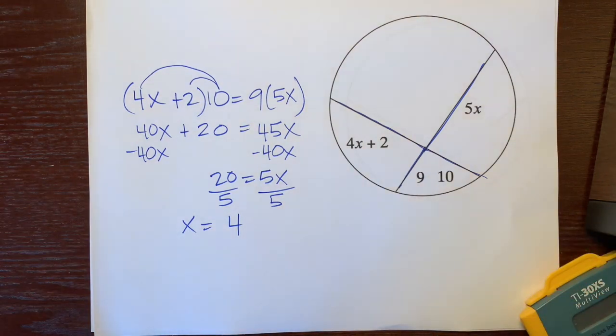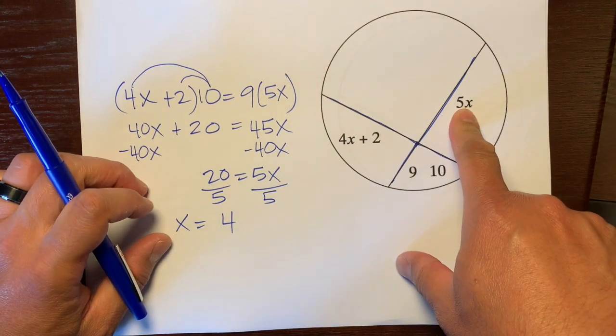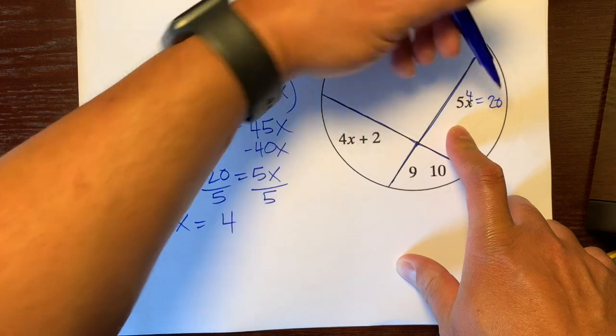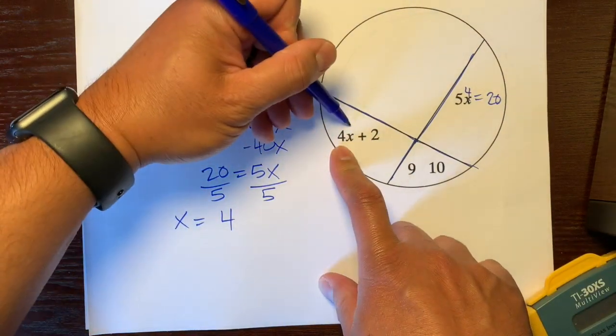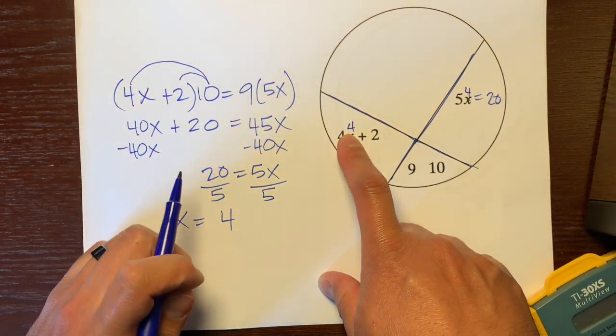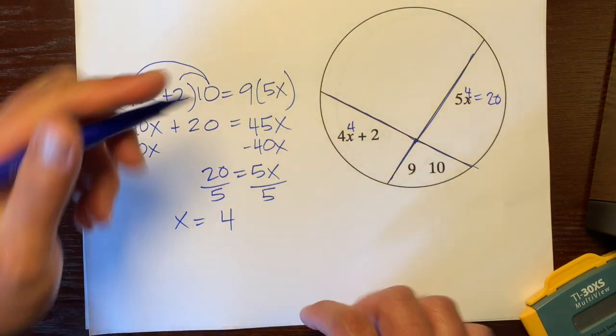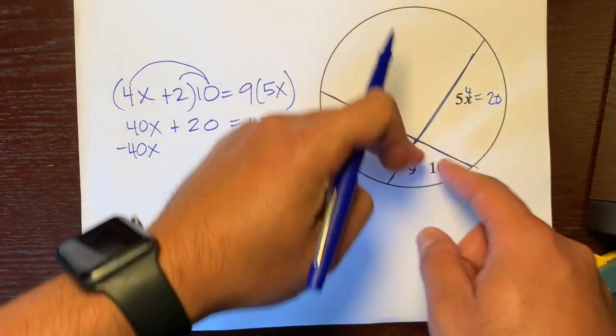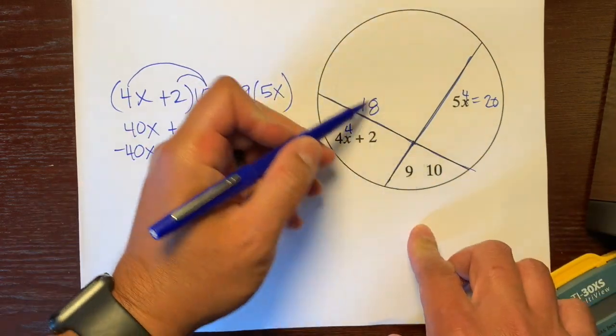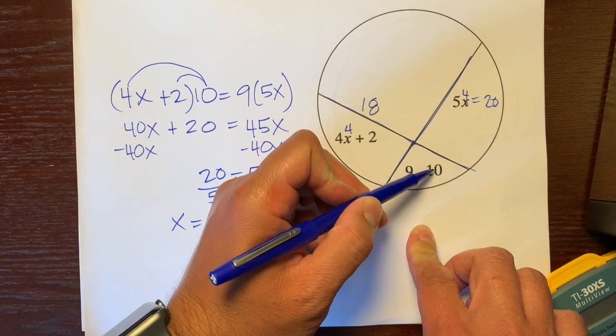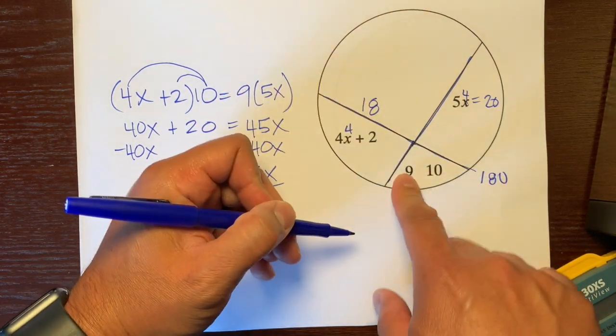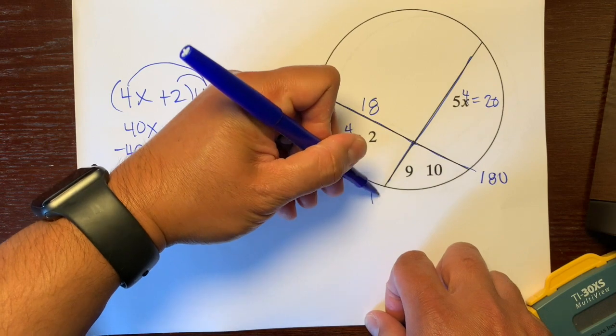If you don't believe me, let's plug it back in. If we plug this into here, 5 times 4 is 20. And if we plug this into here, 4 times 4 is 16 plus 2, which is 18. And yeah, all these numbers are different now, but if we multiply this piece times this piece, 18 times 10 is equal to 180. 9 times 20 is equal to 180.